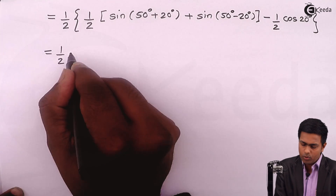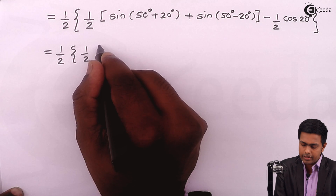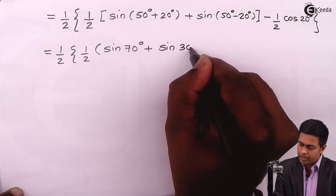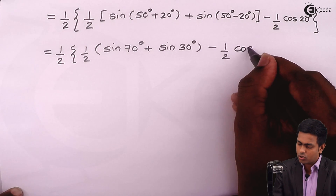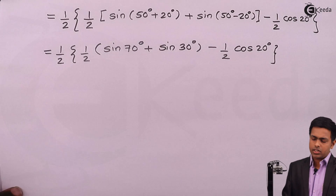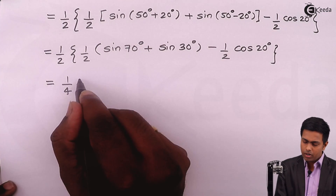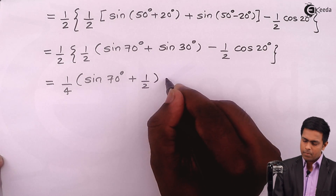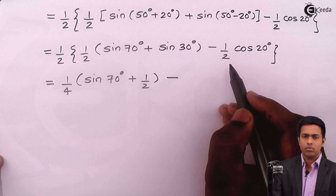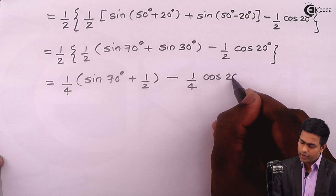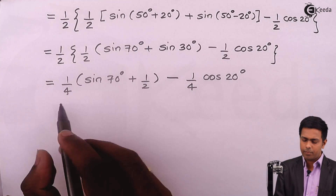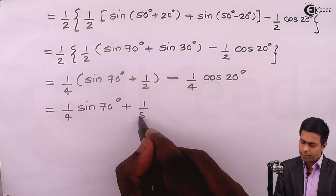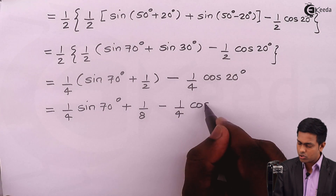So we now have 1/2 outside, multiplied by 1/2·[sin(70°) + sin(30°)] − 1/2·cos(20°). Taking the 1/2 inside and substituting sin(30°) = 1/2: 1/4·sin(70°) + 1/4·(1/2) − 1/4·cos(20°), which expands to 1/4·sin(70°) + 1/8 − 1/4·cos(20°).